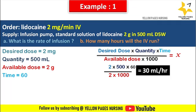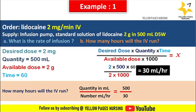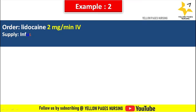Second question: how many hours will the IV run? The formula is quantity in mL divided by mL per hour: 500 ÷ 30 = 16.6, otherwise 17 hours. The IV will run for 17 hours. Second example: doctor's order reads lidocaine 2 milligram per minute IV, supply infusion pump, standard solution of lidocaine 2000 milligram in 500 mL D5 water.